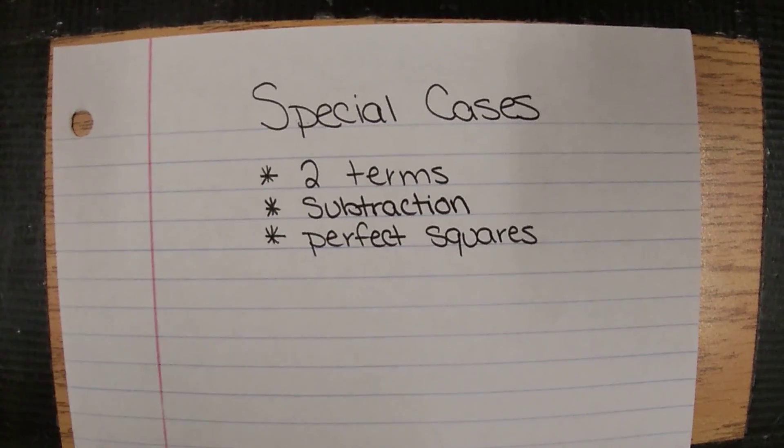The other thing we need to know is that perfect squares, yes we can check the coefficient by using our calculator, but they also have to have an even exponent. If there's a variable, the variable has to have an even exponent.